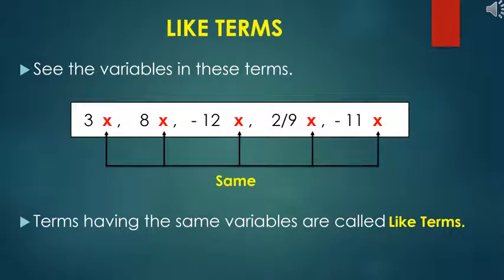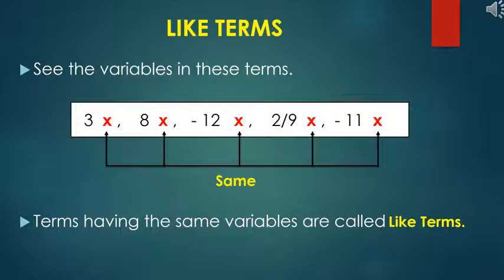Let's begin with our first topic: like terms. See the variables in these terms — 3x, 8x, minus 12x, 2/9x, minus 11x. In every term, we have variable x. The variable is the same. Terms having the same variables are called like terms.